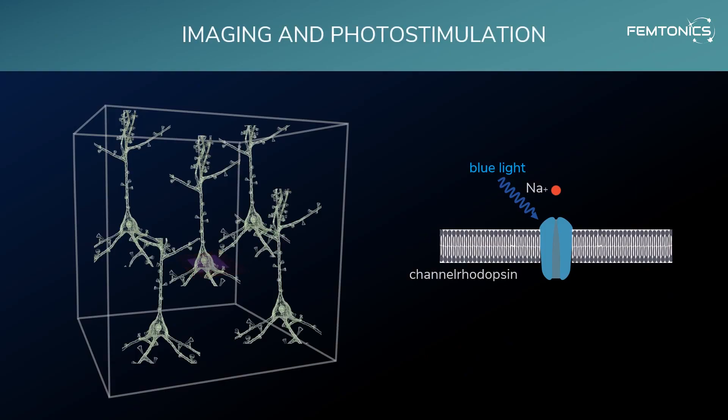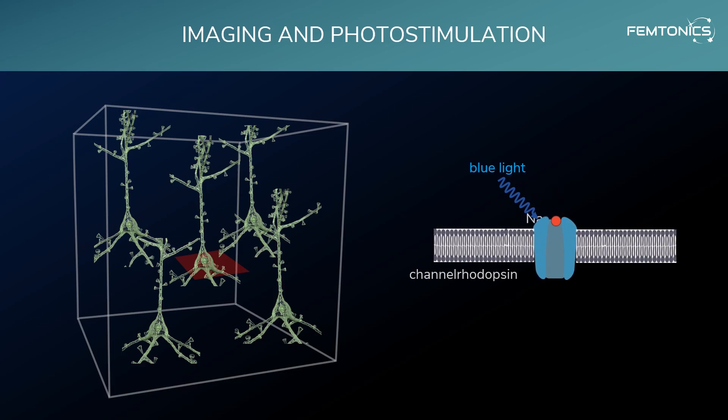The other application is to activate cells by expressing a light-sensitive channel called channelrhodopsin. You can use one laser to activate the channelrhodopsin to get a cell to fire an action potential, while imaging various cells that that cell might be connected to. In this way, you can start to reconstruct how neural networks are assembled by activating target cells that have channelrhodopsin in them, while measuring the activity that results from that activation in other cells. To do that, you really need two lasers.